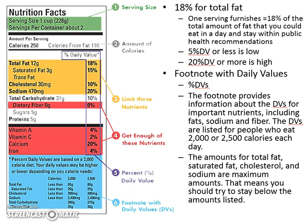The daily value footnote provides information about fats, sodium, and fiber, and each label can be a little different. This one is based on a 2,000 calorie diet and suggests what you should try to stay below. In number six, the blue section on the right-hand side tells you what you should try to stay less than — those are your recommendations.